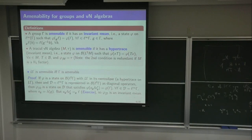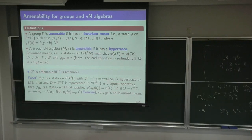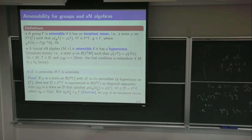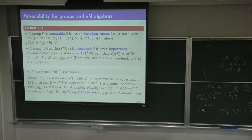Here is the proof. If you take a state on B(L²) with L(Γ) in its centralizer, then restricting to the diagonal — L^∞(Γ) acting on ℓ² as diagonal operators — gives a state on L^∞(Γ) satisfying the translation invariance. Because u_g·F·u_g* is just the left translation of F by g — leave that as an exercise. So if you have a hypertrace, you have an invariant mean on Γ.